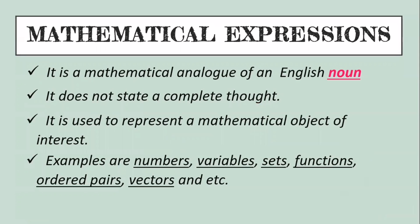A mathematical expression is a mathematical analog of an English noun. When we say noun, it is a name of a person, place, or thing. For example: a person — Cha-Cha; a place — Manila; a thing — calculator. Just like an English noun doesn't state a complete thought, a mathematical expression also does not state a complete thought — it is used to represent a mathematical object of interest.